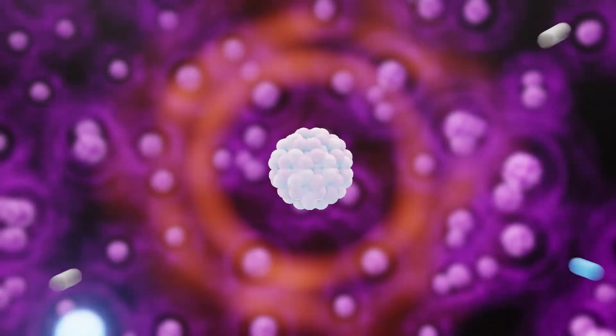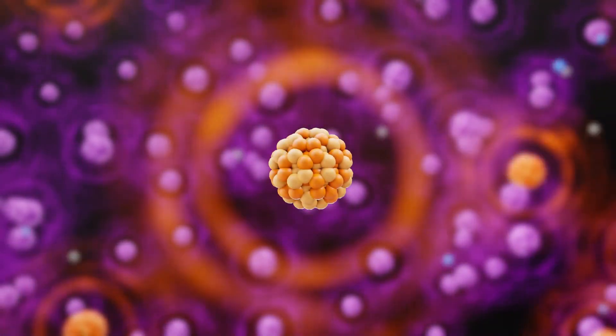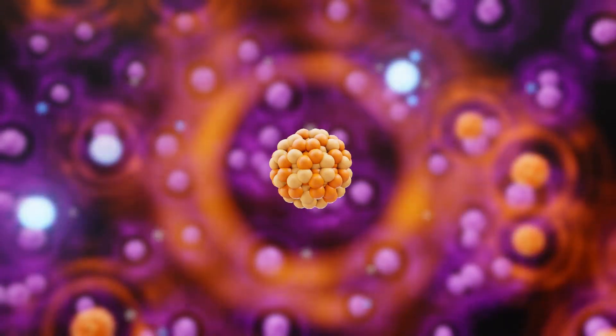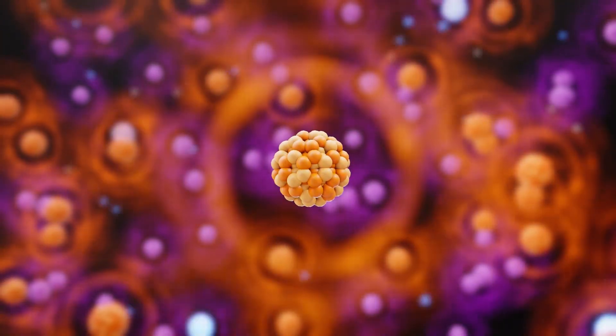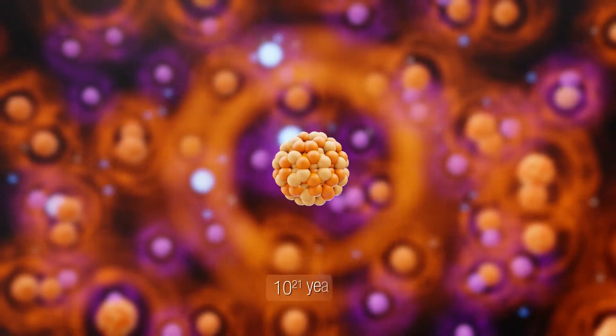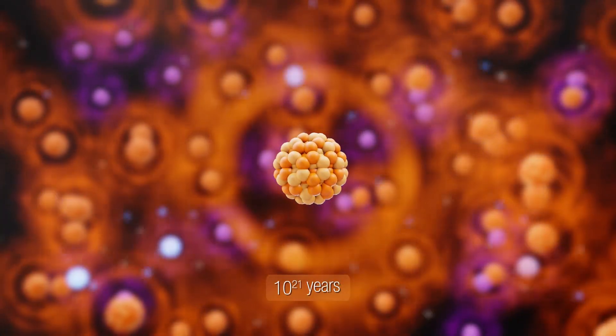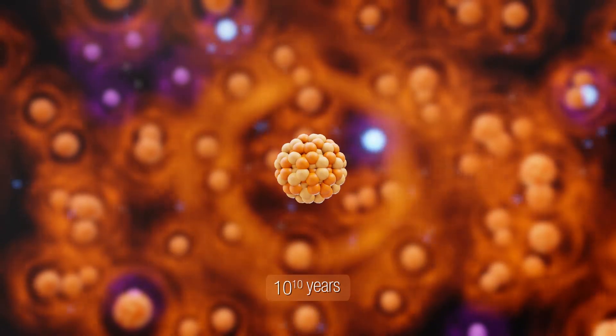A version of the reaction with the additional emission of two anti-neutrinos is already known to happen, two neutrino double beta decay, and it takes 10 to the 21 years, while the age of the universe is only 10 to the 10 years.